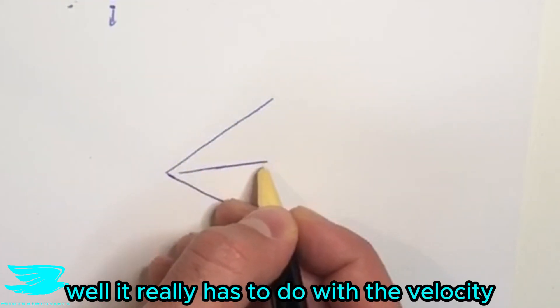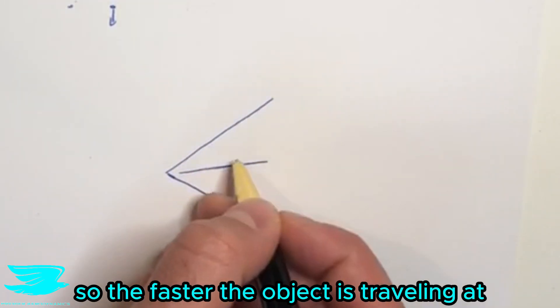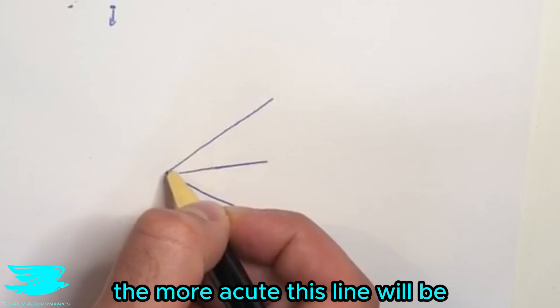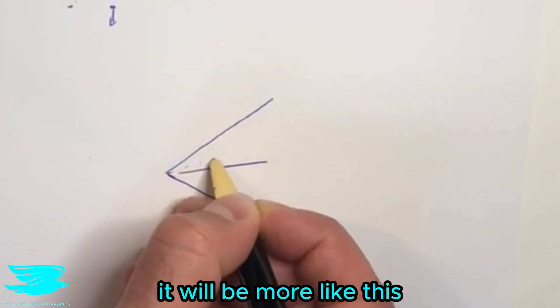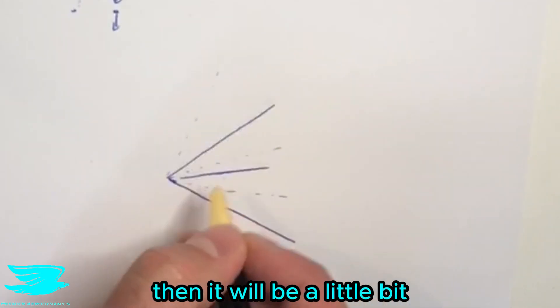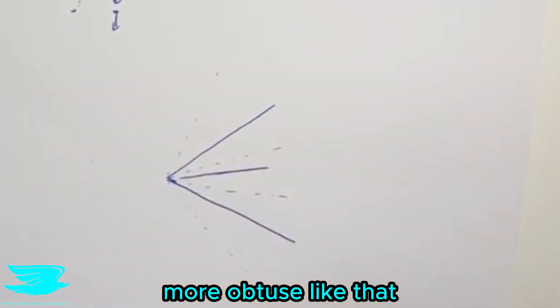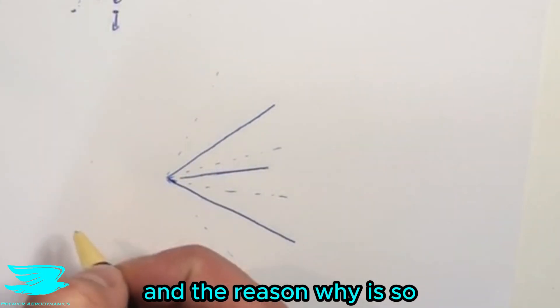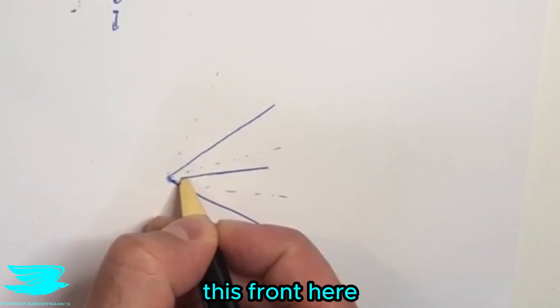Well, it really has to do with the velocity that this object is traveling at. The faster this object is traveling, the more acute this line will be. So if it's traveling very fast, it will be more like this. And if it's traveling very slow, then it will be a little bit more obtuse like that. And the reason why is, let's consider this object, this front here.